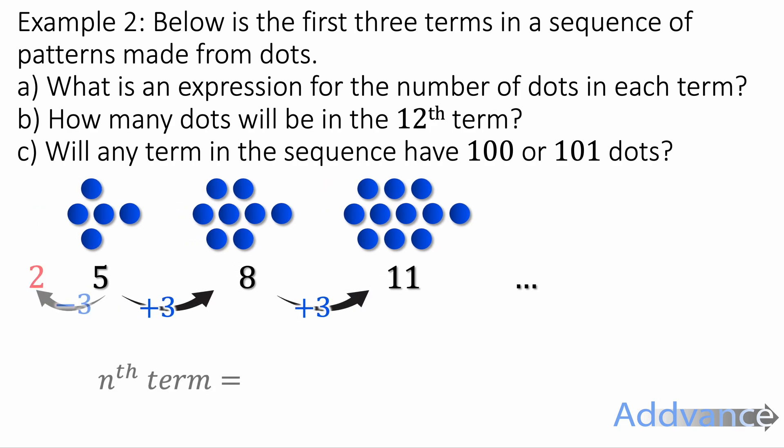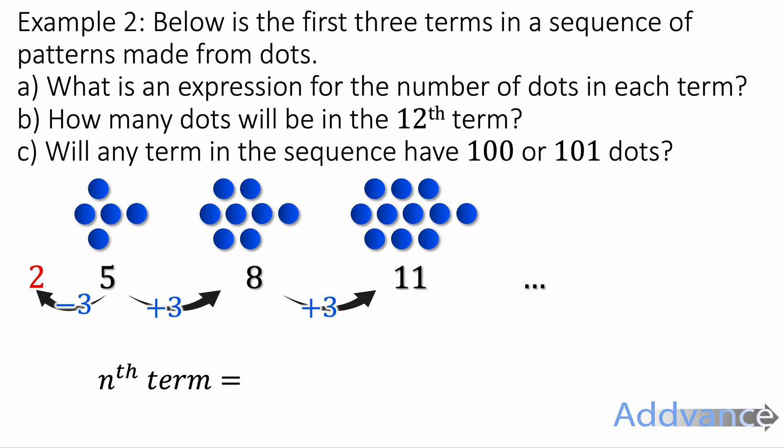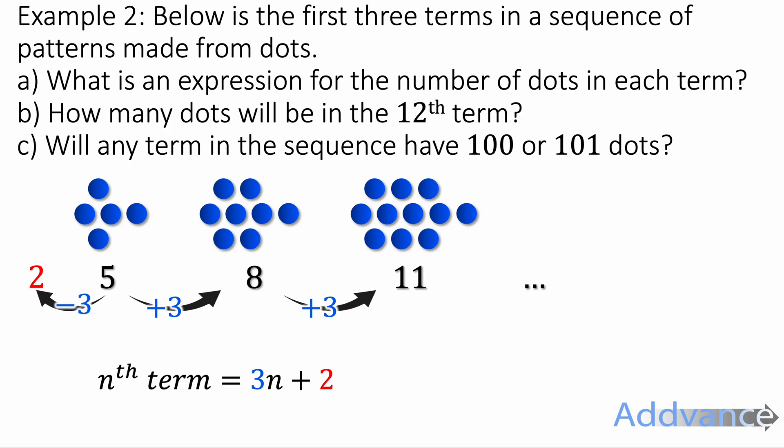It's going up by 3 each time. And if you go backwards one term, it'll be 2. So you'll get 3n plus 2 as the nth term. So you want to find the 12th term. We're going to put n equals 12 into that expression. 3 times 12 plus 2 is 38. So the 12th term is 38.